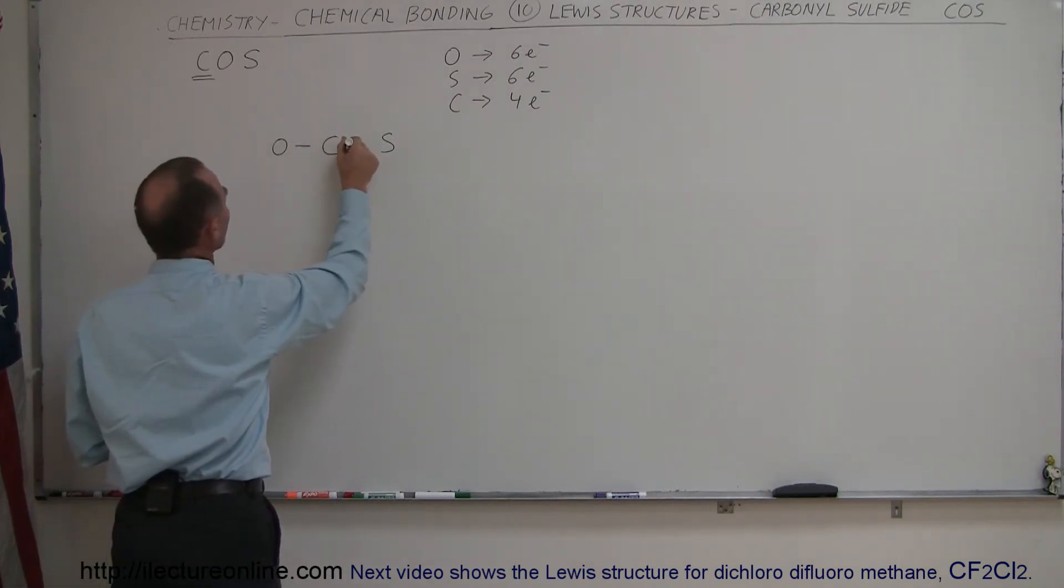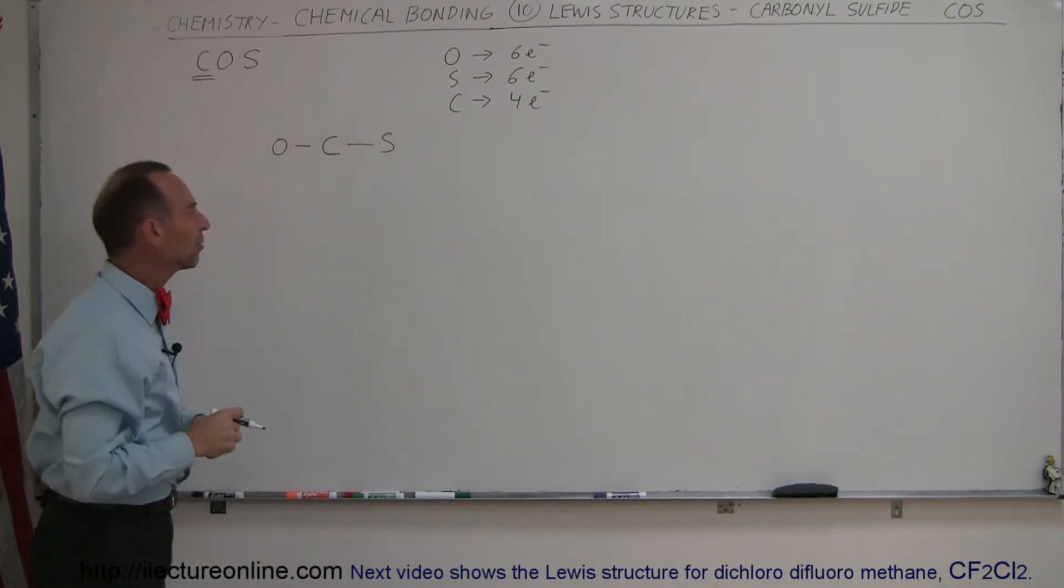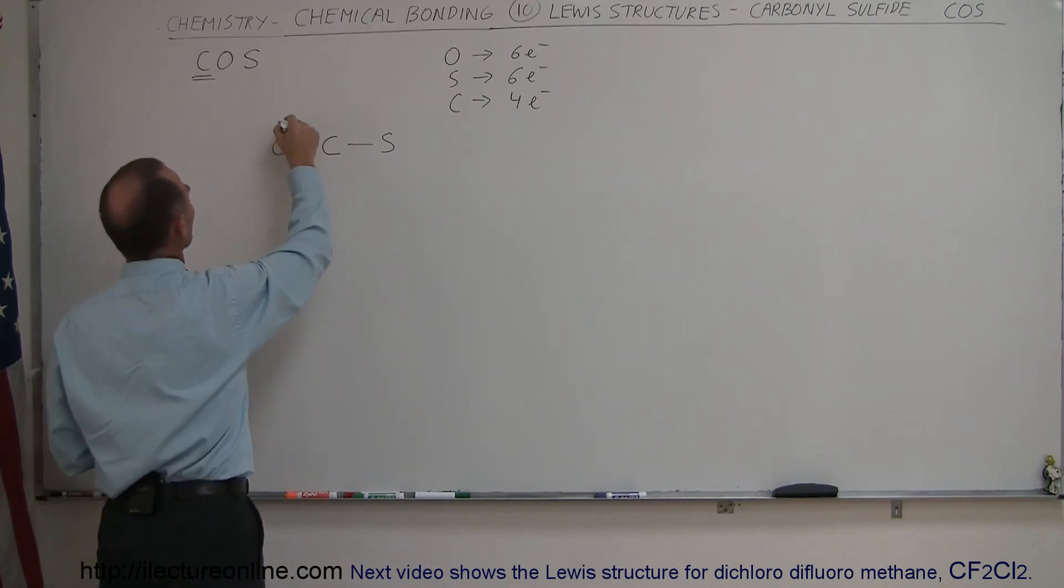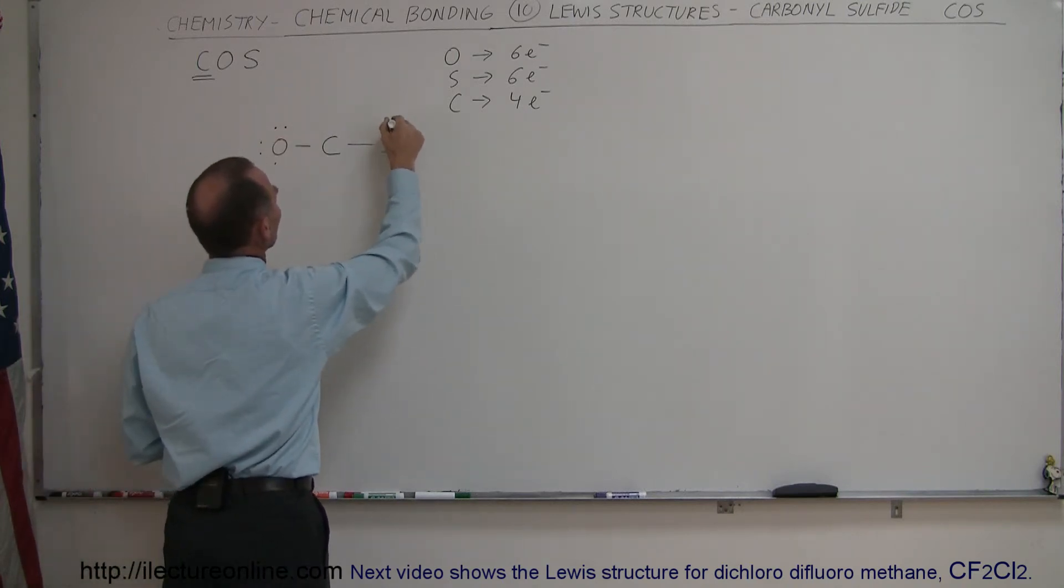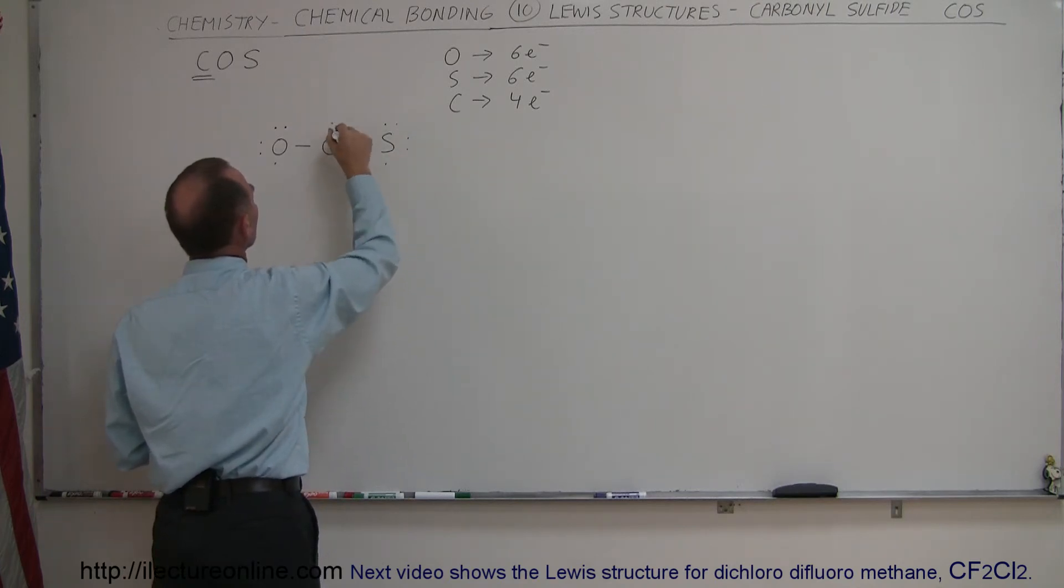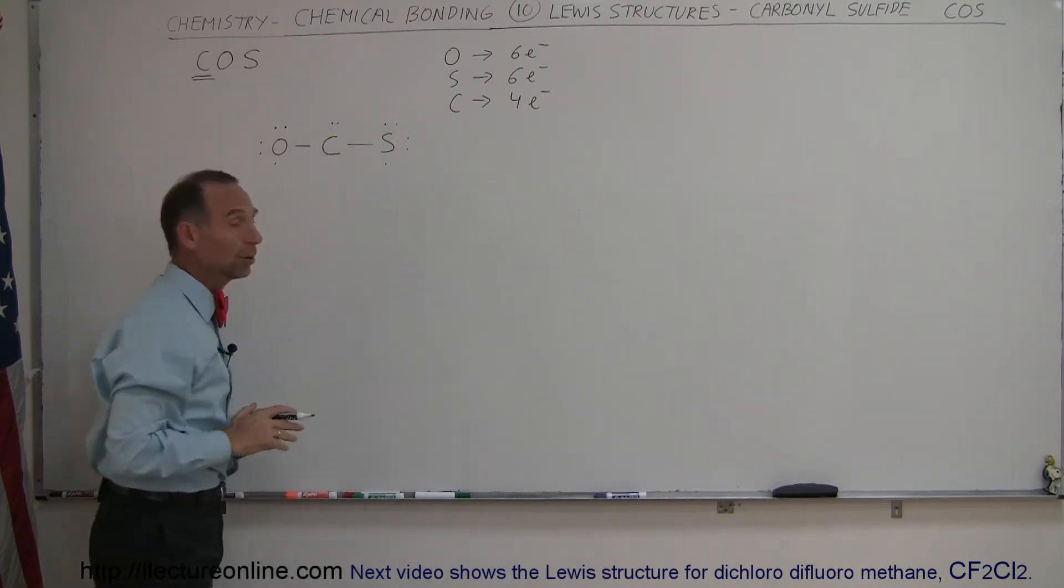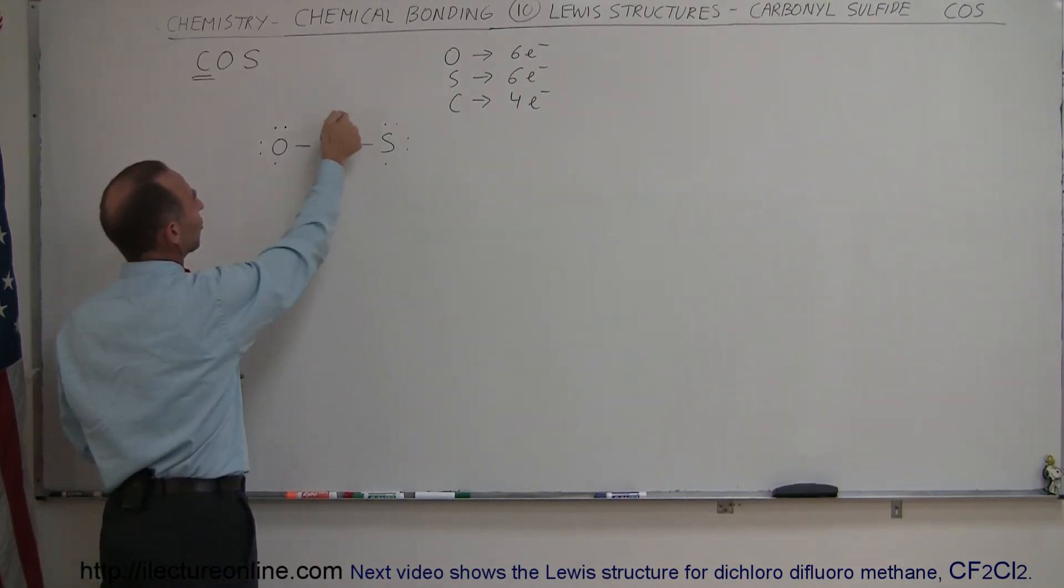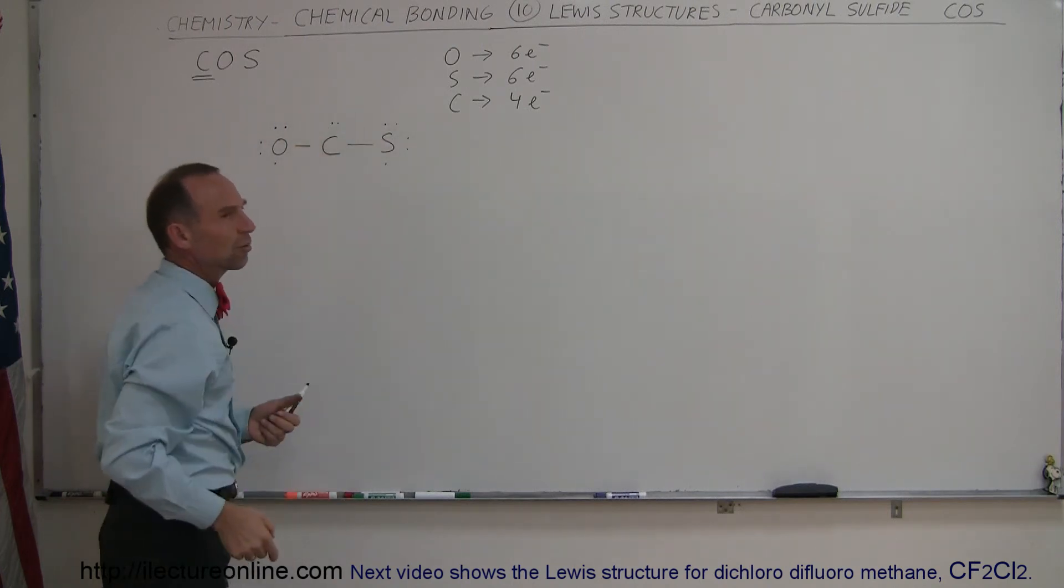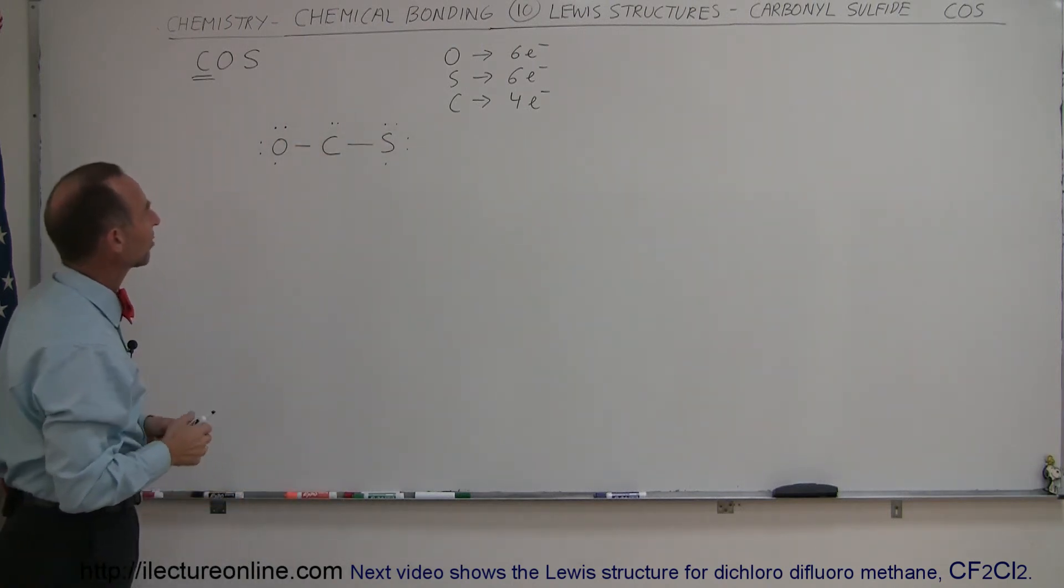So if we make a single bond there, that would kind of cause a problem. If I have a single bond, that would leave us with five electrons around oxygen, that would leave us with five electrons around sulfur, and that would leave us with one and two electrons for carbon. Notice that carbon shares two of its electrons to make the two bonds, so it has a total of four electrons, which would leave it only with six electrons as the number of valence electrons for carbon,